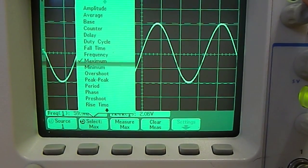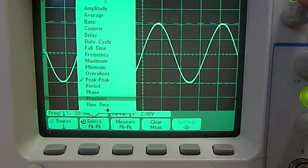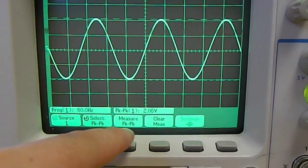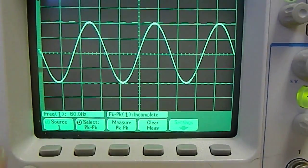You choose whatever you want to choose. For example, let's do peak to peak. Then you click on measure peak to peak.